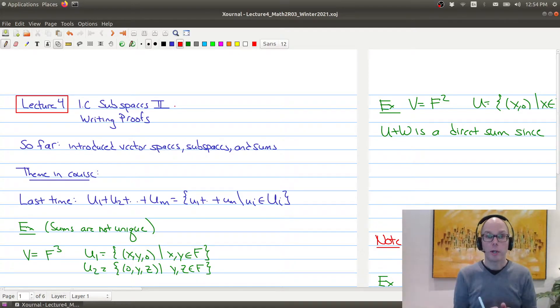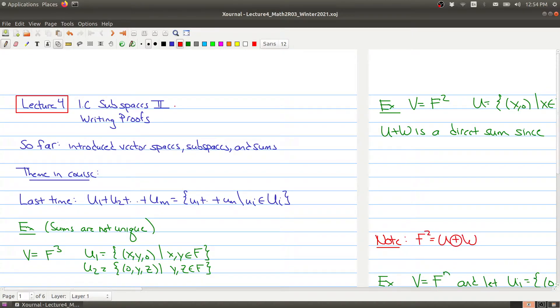But first, we'll talk about subspaces, and the big thing that we're going to introduce today is how to do a direct sum, or what a direct sum is. So just a quick recap of where we are. So far, we've introduced what a vector space is, we've introduced subspaces, and we've talked about sums. And one theme in this course that you'll see over and over again is what we want to do is we want to decompose vector spaces into subspaces. And these subspaces are going to maybe tell us something about our original vector space that we started with.